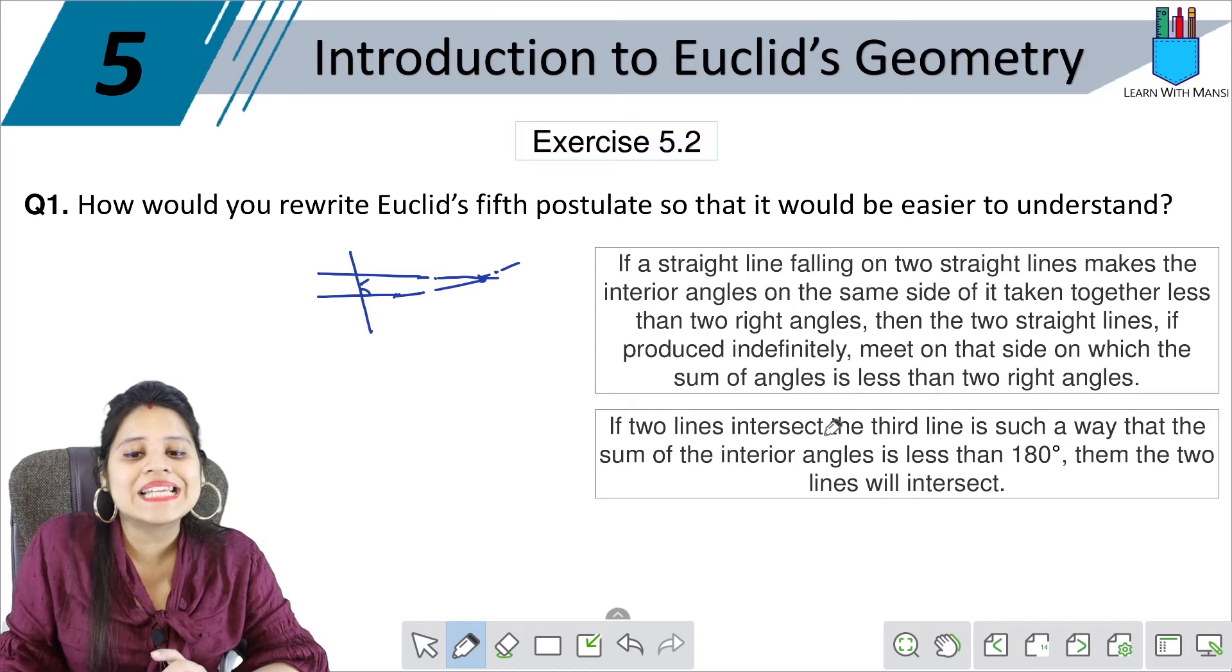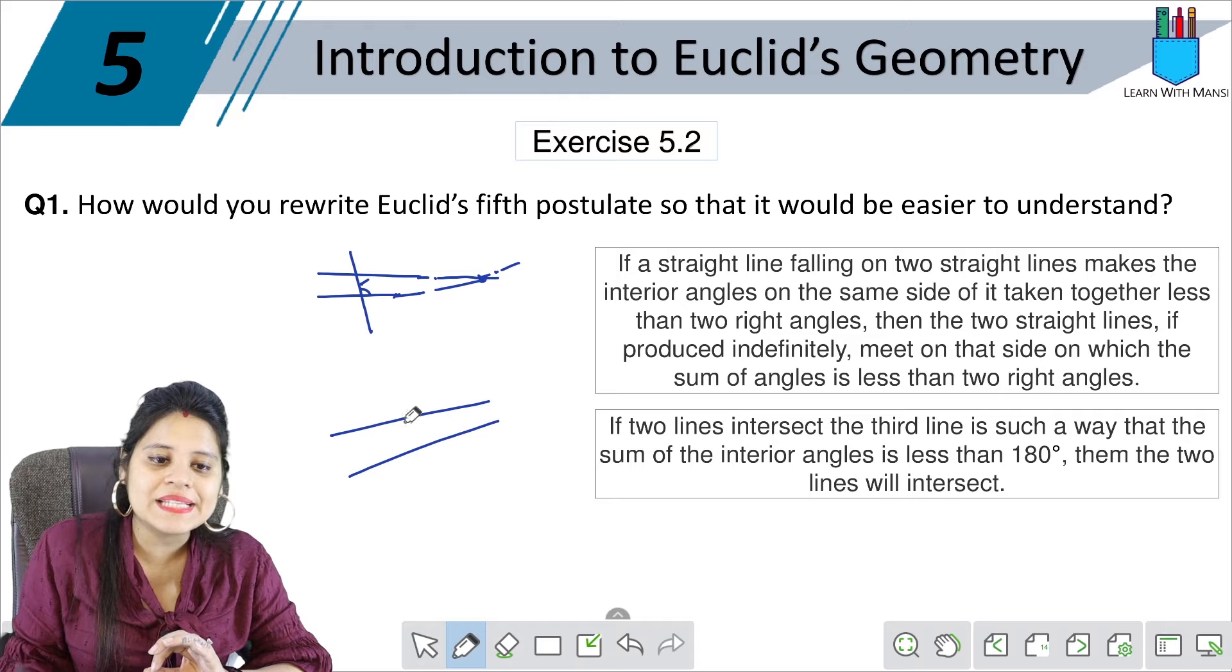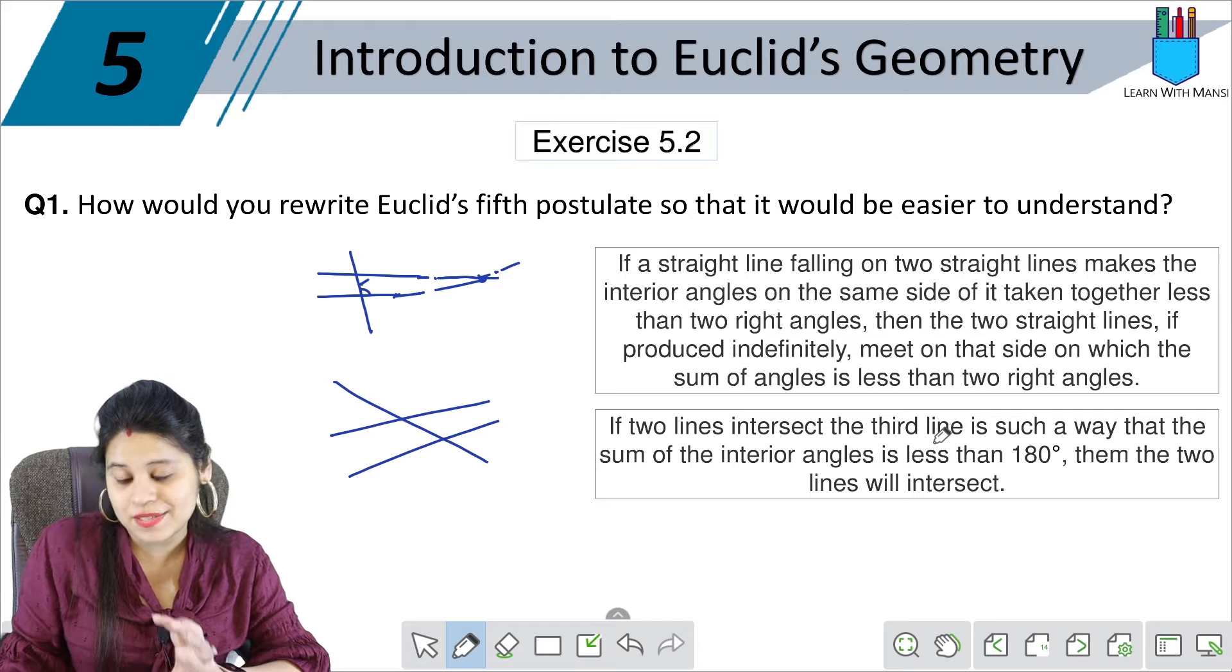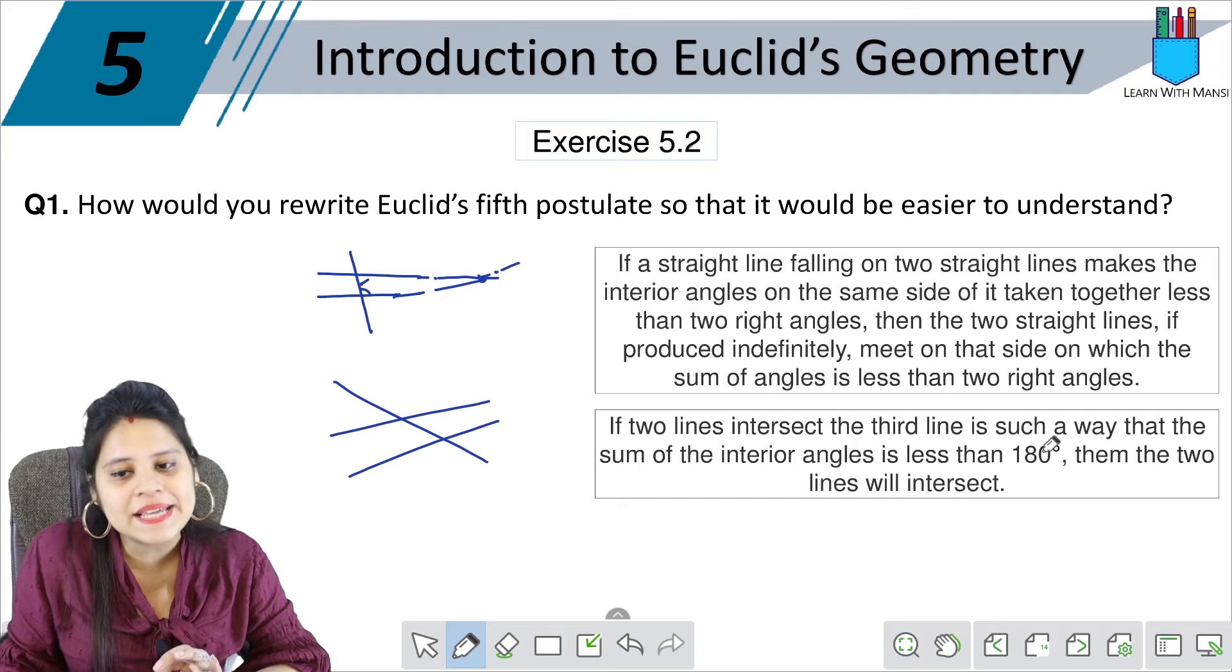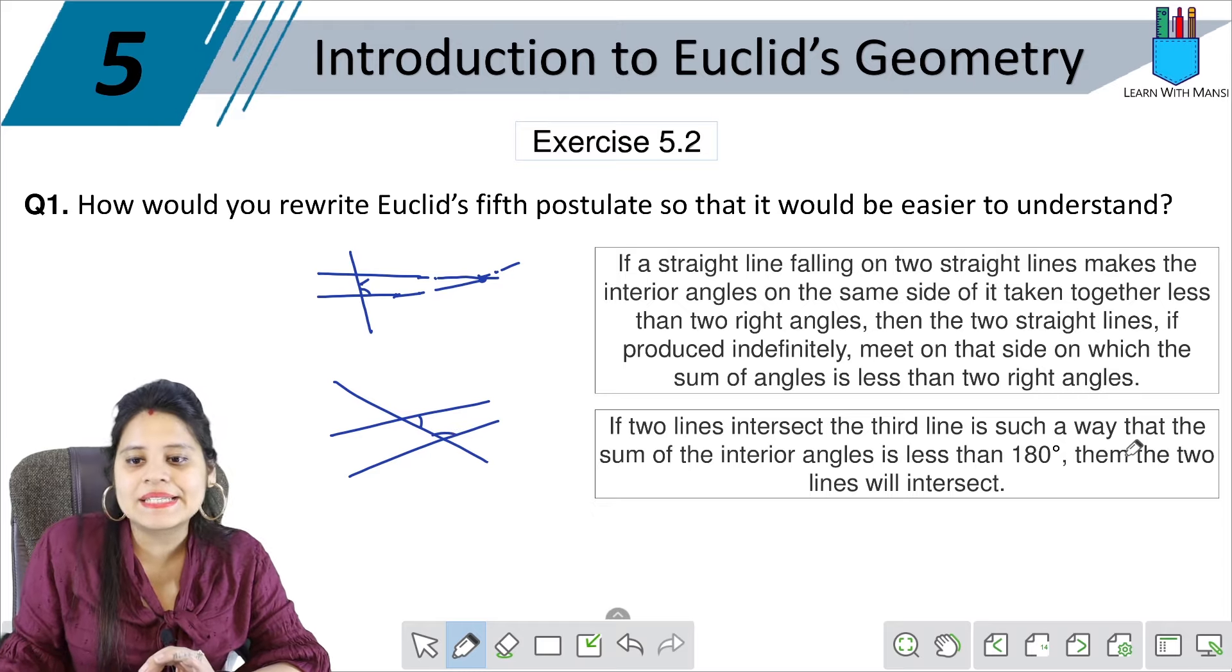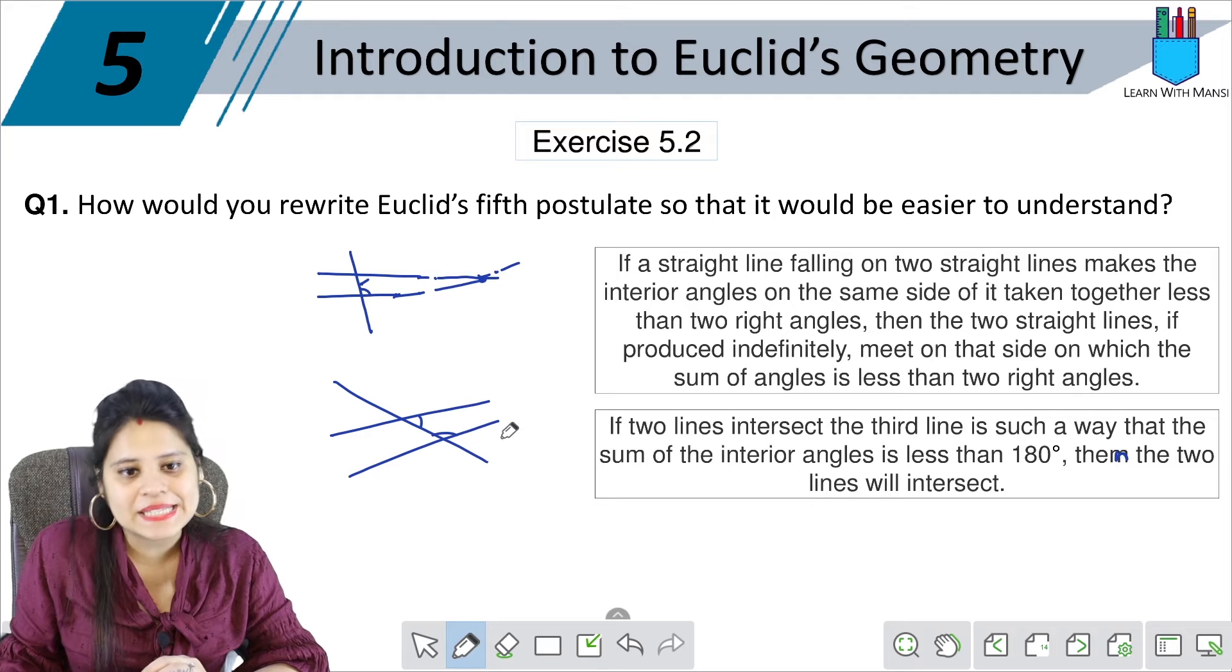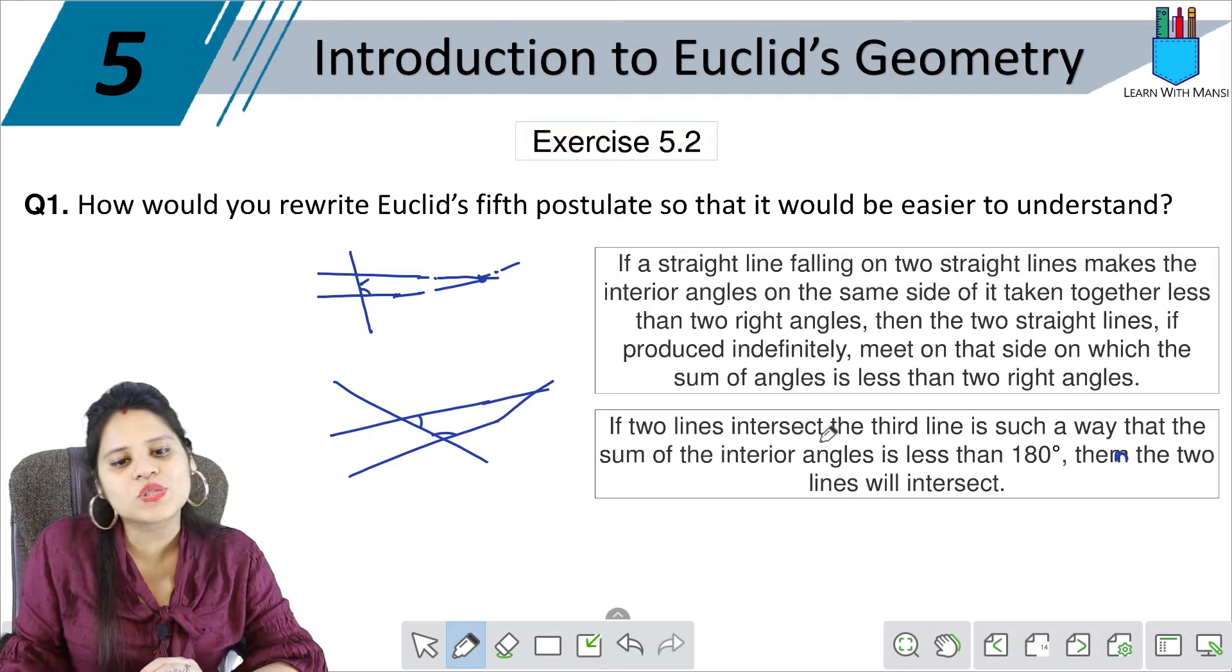If two lines intersect the third line in such a way that the sum of the interior angles is less than 180 degrees, then the two lines will intersect. So on the same side, the lines will intersect. We can write it in this way.